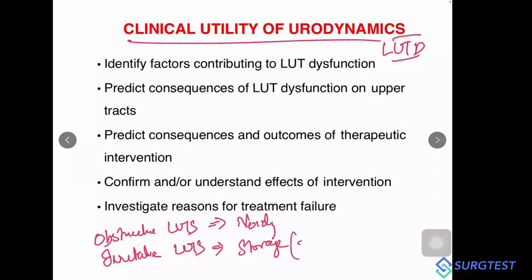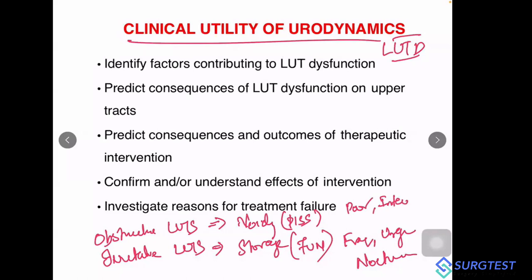Among the various utilities of urodynamics, you can club them into five different uses. The first is identifying the various factors contributing to lower urinary tract dysfunction. Take a 60-year-old male presenting with voiding LUTs. Let me clarify voiding LUTs versus storage LUTs. The ICS — the International Continence Society — has renamed the older terms.